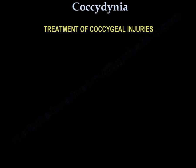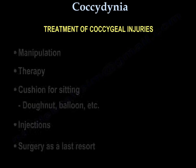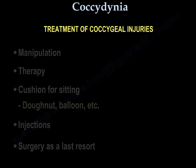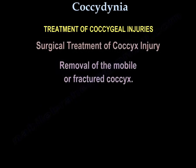Treatment of coccygeal injuries includes manipulation, therapy, cushions for sitting such as donut or balloon cushions, injections, and surgery as a last resort. In surgery, the mobile or fractured coccyx is removed.